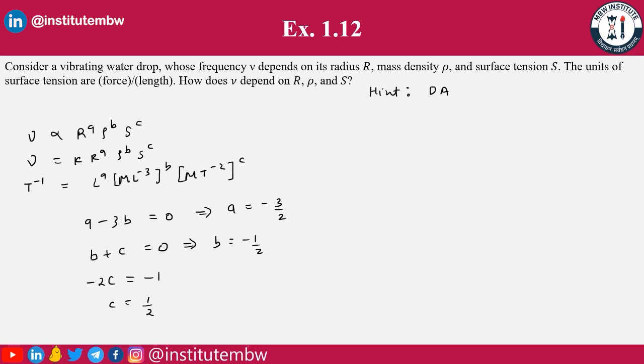By putting the value of a, b, c, we will get nu is equal to k R to the power a, that is minus 3 by 2, and rho to the power b, that is minus 1 by 2, and S to the power c, that is 1 by 2. So we can write it like this: k under root S over rho r cubed. That's how the frequency will look like.